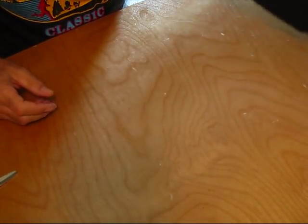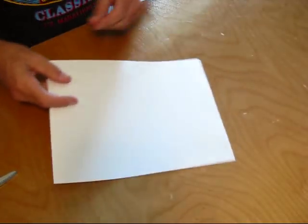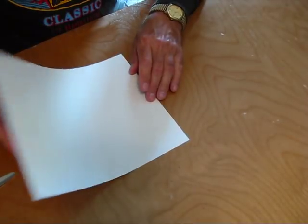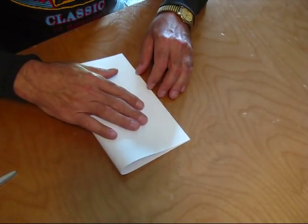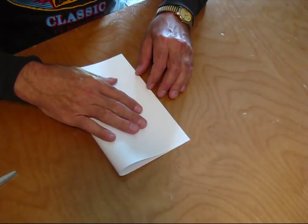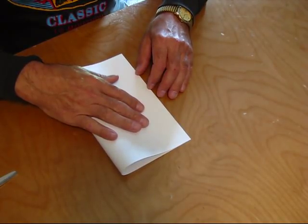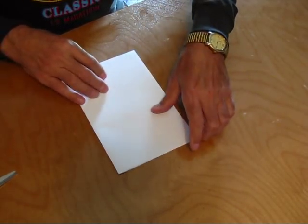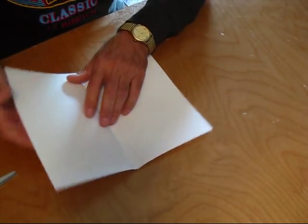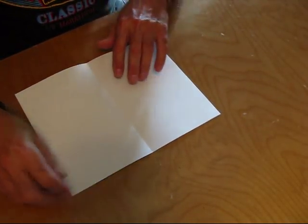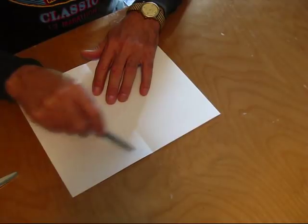Take some standard eight and a half by eleven printer paper. Start out by folding it in half, match up the edges carefully and make the crease. Unfold. Now we're going to find the halfway point between the fold and the edge.